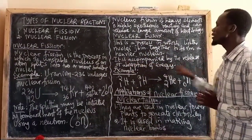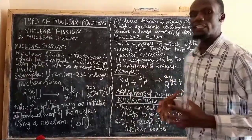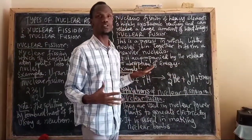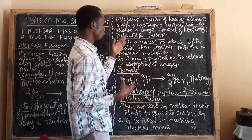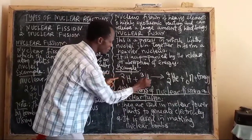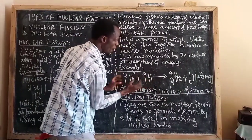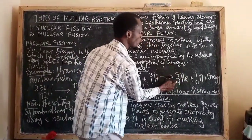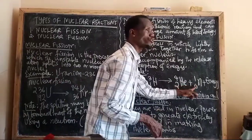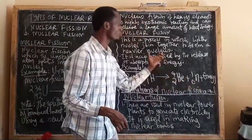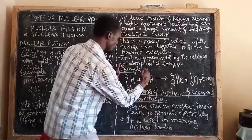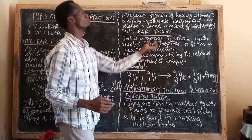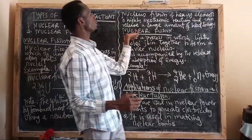Nuclear fusion is accompanied by the release or absorption of heat — heat may be released or heat may be absorbed. As an example, when you take the isotopes of hydrogen and join them together, you get helium, a larger nucleus, in the presence of neutrons. Energy is released in this process. So joining together these isotopes of hydrogen to form helium is nuclear fusion.